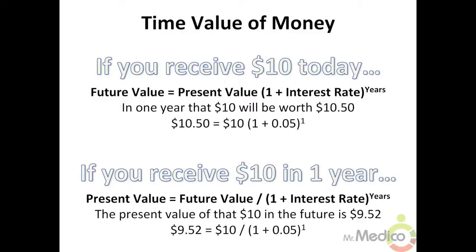Now assume you will receive $10 in one year and want to determine its present value. The present value formula is: present value equals future value divided by (1 plus the interest rate) to however many years you are calculating. The present value of that $10 in the future is $9.52 — that is, $10 divided by (1 + 0.05) to the first power. These time value of money formulas show that you are better off receiving a dollar today than in the future, because the dollar today can earn interest. Interest represents the opportunity cost of holding money.